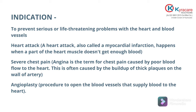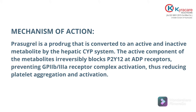Now its mechanism of action: after oral administration, Prasugrel Hydrochloride is first converted into an active metabolite with the help of the hepatic CYP system — that is, the cytochrome P450 enzyme present in liver cells. The active metabolite is formed with the help of this cytochrome P450 enzyme.